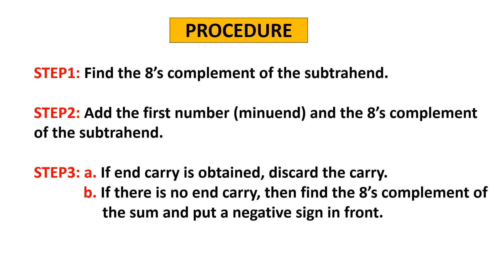Procedure for Octal Subtraction using 8's Complement. Step 1: Find the 8's Complement of the Subtrahend. Step 2: Add the first number, that is the Minuend, with the 8's Complement of the Subtrahend found in Step 1. Step 3: If an end carry is obtained, discard the carry. If there is no end carry, then find the 8's Complement of the Sum and put a negative sign in front.